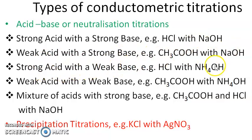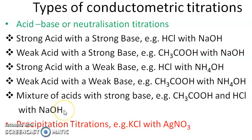We also have titration of a weak acid with a strong base, like acetic acid with NaOH; titration of a strong acid with a weak base, like HCl versus ammonium hydroxide; and a weak acid and weak base like acetic acid and ammonium hydroxide. Additionally, an important aspect is that you can take a mixture of acids and titrate against a strong base — for example, a mixture of acetic acid and HCl titrated against NaOH — to determine the concentration of each acid individually and accurately.